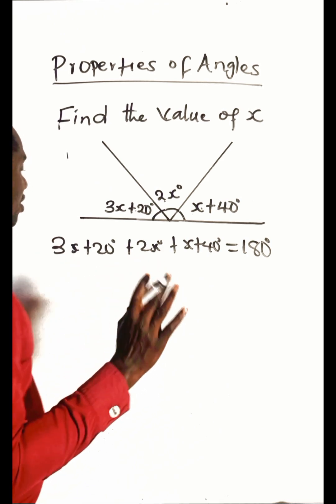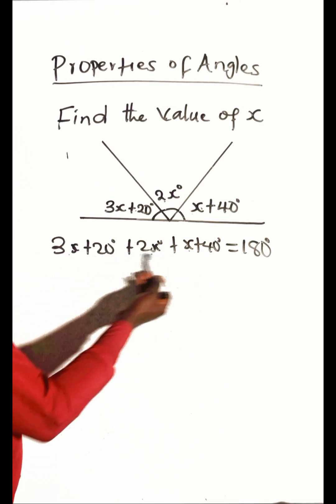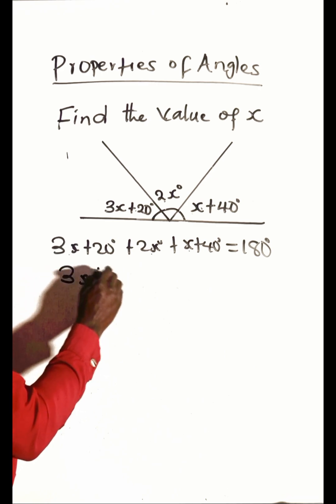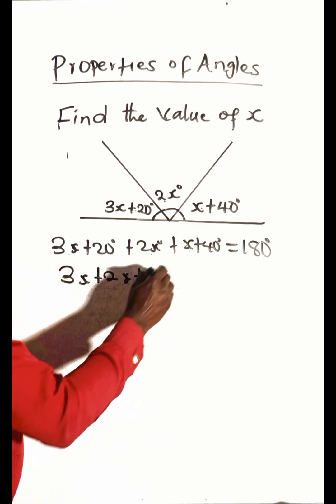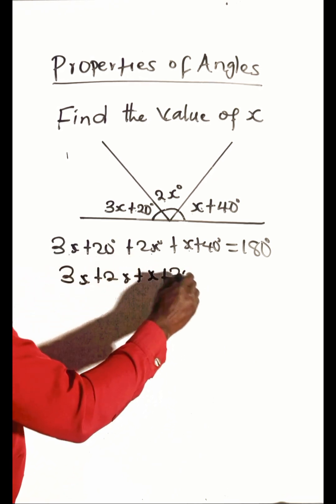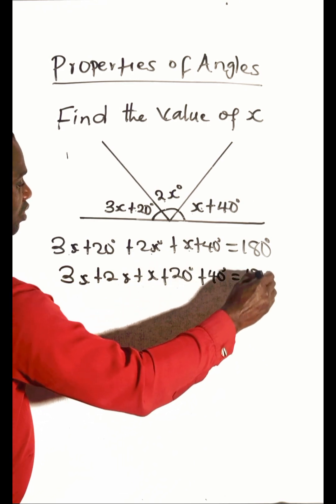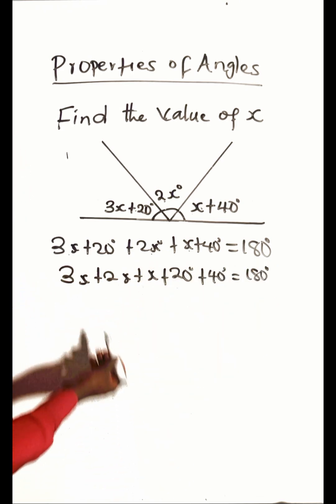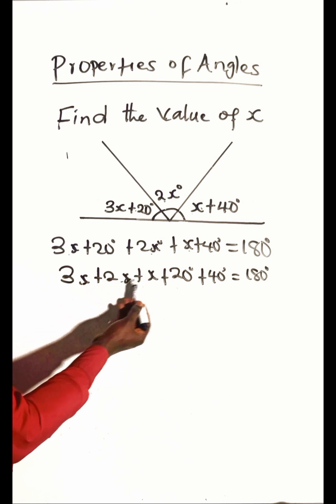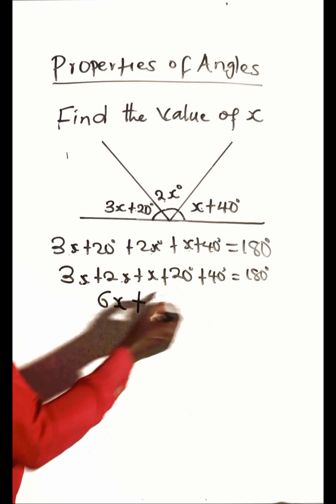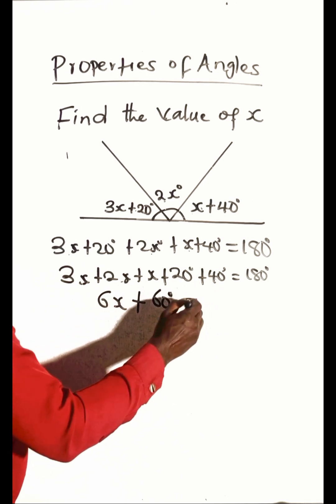We have x values here and constants here, so let's first add the ones with x, then add the constants. 3x + 2x + x is 6x, and 20 + 40 is 60, so we have 6x + 60 = 180 degrees.